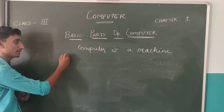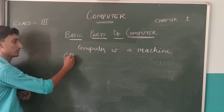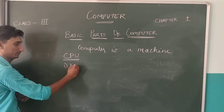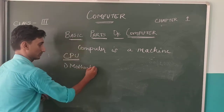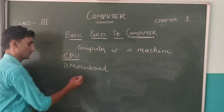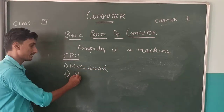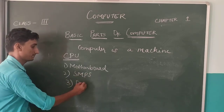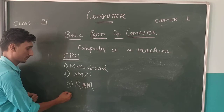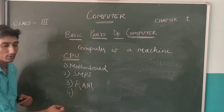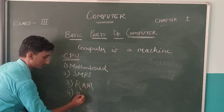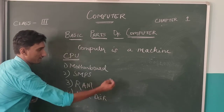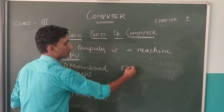The CPU has different parts: first motherboard, second is SMPS, third one is RAM, fourth one is hard disk, and fifth one is microprocessor.